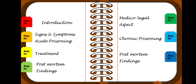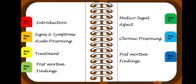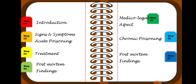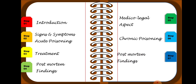The first part is an introduction about Phosphorus. Second, we will include signs and symptoms of acute poisoning of Phosphorus. In the third, we will learn about treatment. In step 4, we will learn about post-mortem findings after Phosphorus poisoning. In the fifth step, we will learn about the medical-legal aspect. In the sixth step, we will learn about chronic poisoning of Phosphorus. And in the last, we will learn about post-mortem findings.